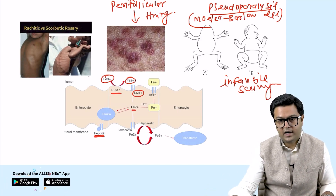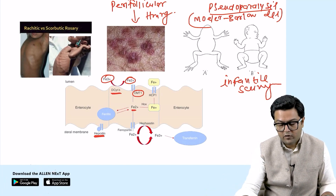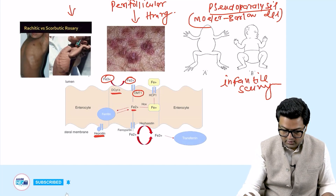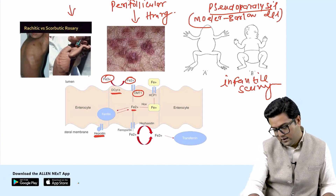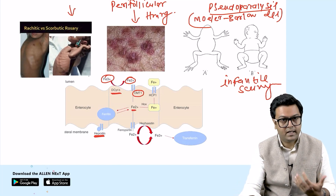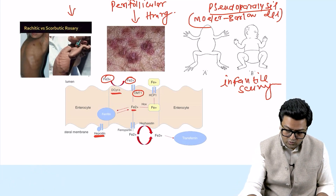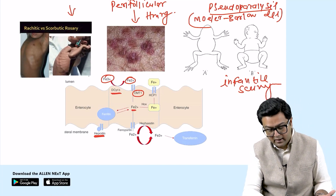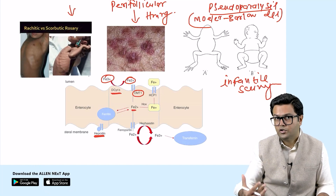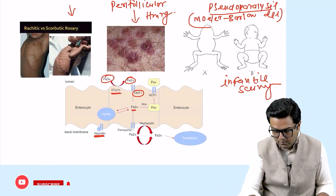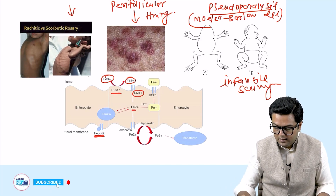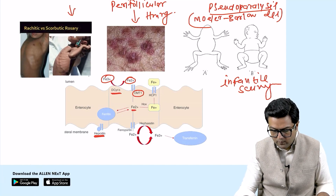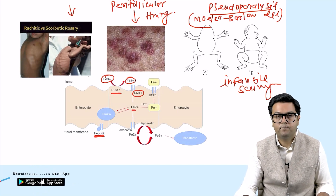To summarize: in children, pseudoparalysis; in adults, perifollicular hemorrhage. Another important feature of scurvy is scorbutic rosary — the sternum is pushed back and the costochondral junctions appear very sharp, unlike rachitic rosary which is not sharp.